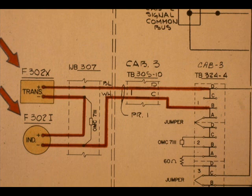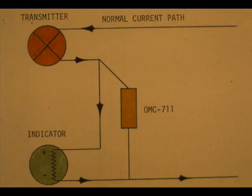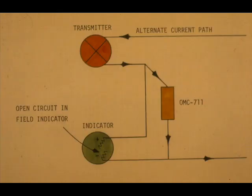Take a close look at the current paths through transmitter F302-X and field indicator F302-I. There are two paths for current. The current normally goes through the indicator. But suppose the field indicator malfunctioned and sustained an open circuit.